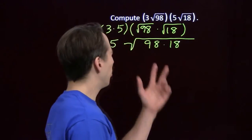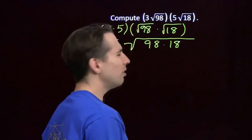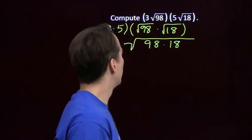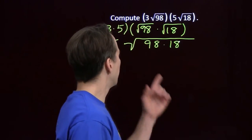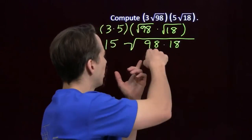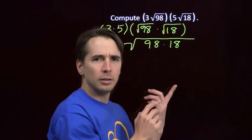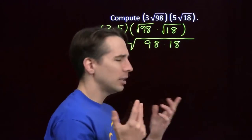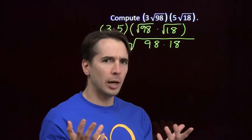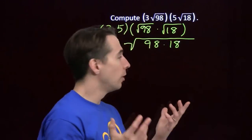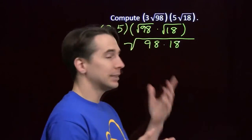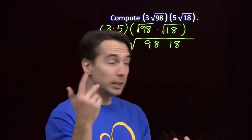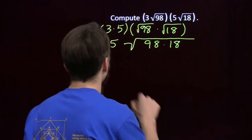I don't want to multiply these out — maybe this trick isn't so cool after all. But wait a second: 98 is 49 times 2. 49 is a perfect square, I can break that up. And 18 is 2 times 9, and 9 is a perfect square.